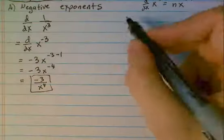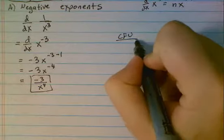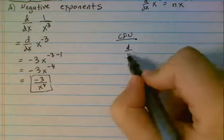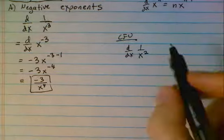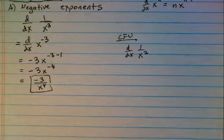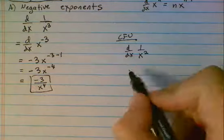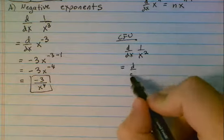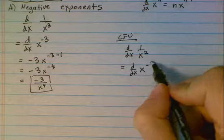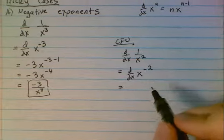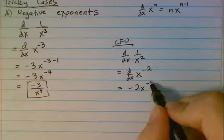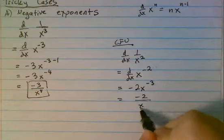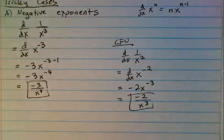Try a problem on your own. Please find the derivative of 1 over x squared. Pause the video now. To do this, the first thing we're going to do is rewrite this as x to the negative 2. Then we use our power rule — subtract 1 from the exponent. And there we go.